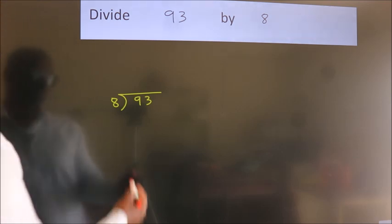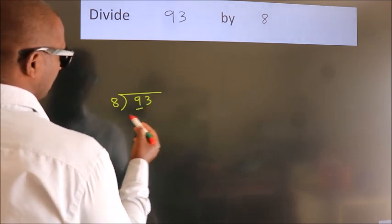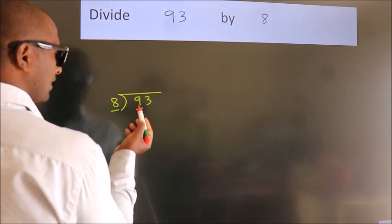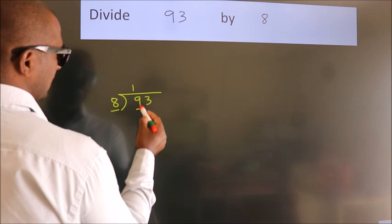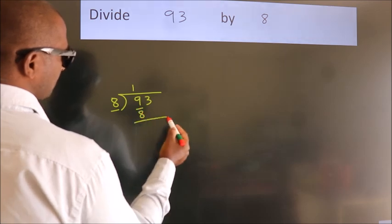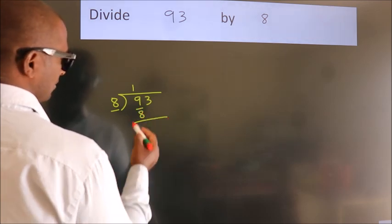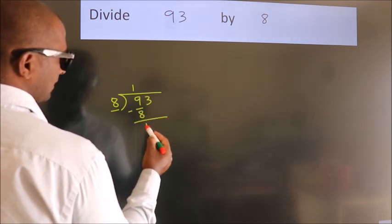Next. Here we have 9, here 8. A number close to 9 in 8 table is 8 once, 8. Now, we should subtract. We get 1.